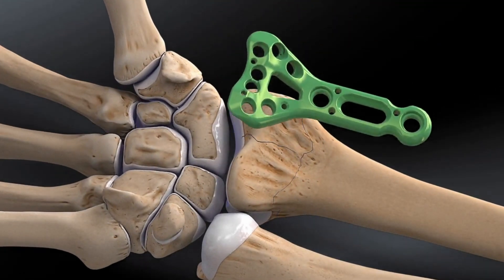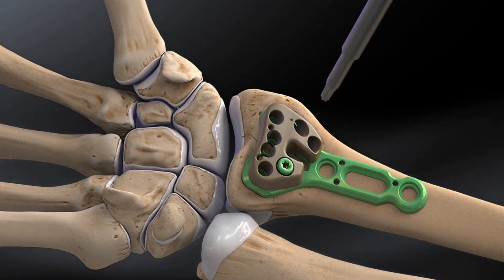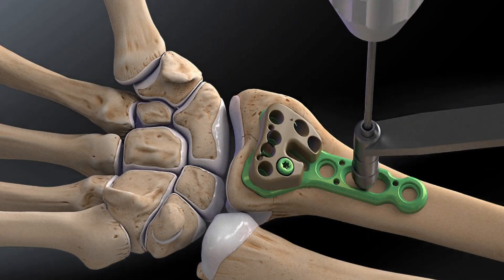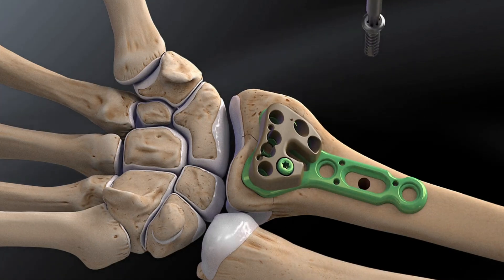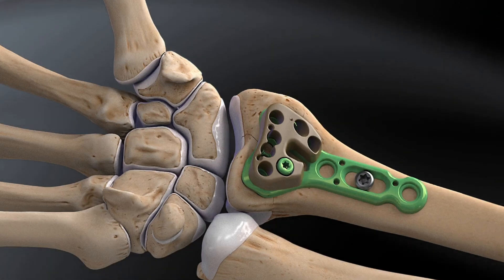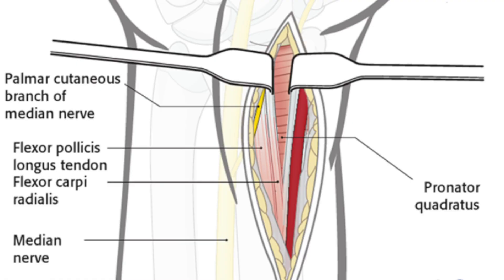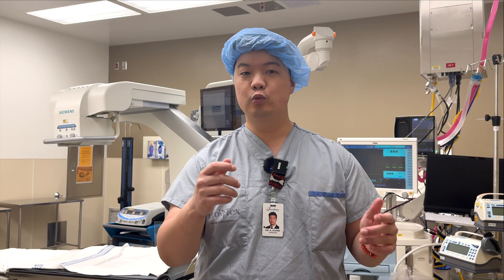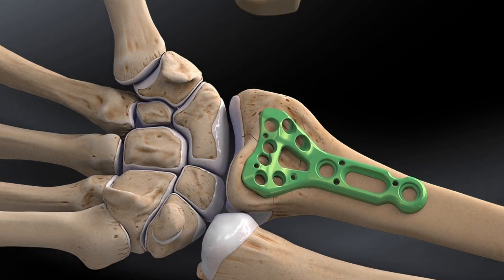ORIF is one of the most common surgeries we perform. You may receive a nerve block, a general anesthetic, or a combination of both. Depending on the fracture type, you may have an incision on the bottom of the wrist — the volar side — or the top — the dorsal side — or sometimes both. Most commonly, we use a single volar incision through what's called the flexor carpi radialis, or FCR approach, also known as the modified Henry's approach, gently retracting muscles to access the fracture and reduce it back into the correct position.